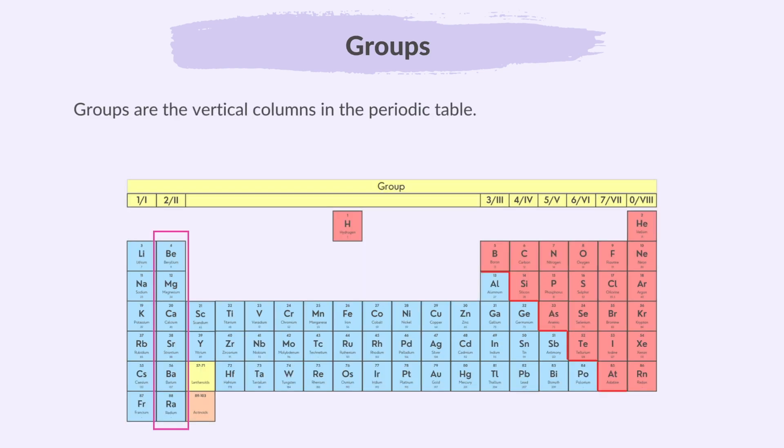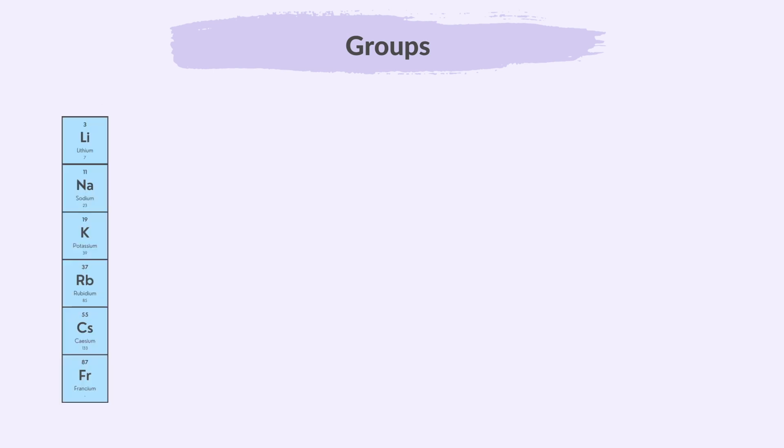Groups are the vertical columns in the periodic table. Groups show how many outer electrons each atom has. Let's take lithium, for example. Its atomic number is 3, so its electron configuration is 2, 1. Since there is one electron in its outer shell, we know that lithium belongs to group 1.